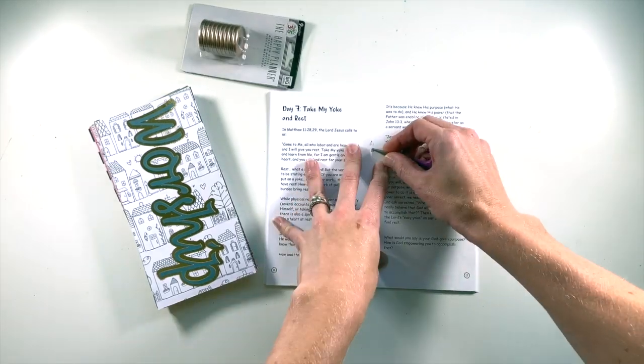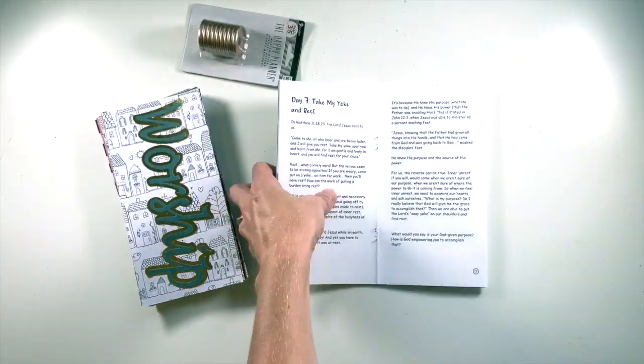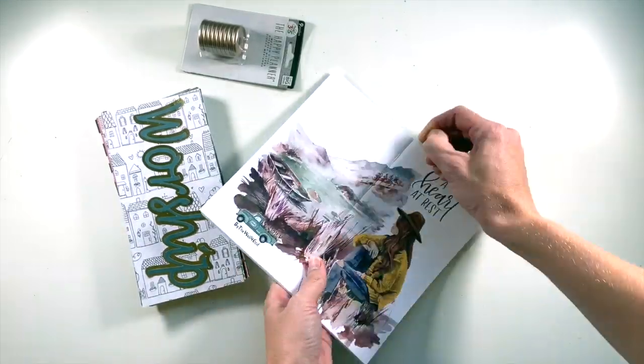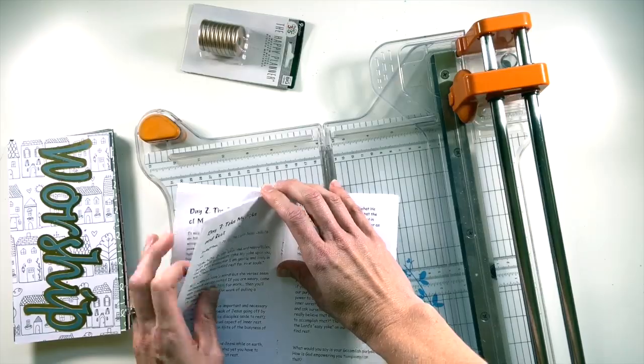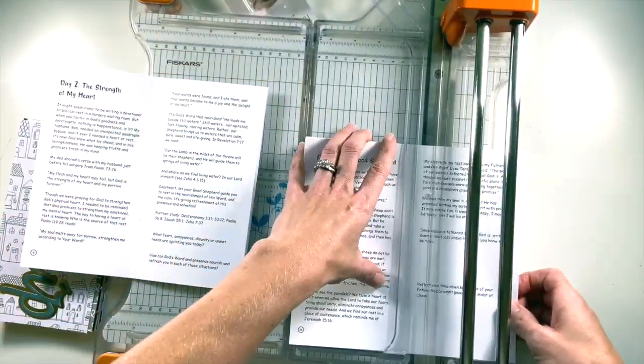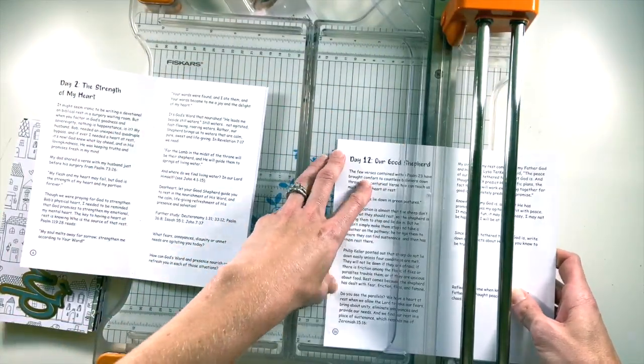Okay, the first step to rearranging this devotional is to take it apart, so I'm using some tiny scissors and pulling out the staples in the devotional. I will pull out my paper cutter. I will link it below. I always have people that ask.